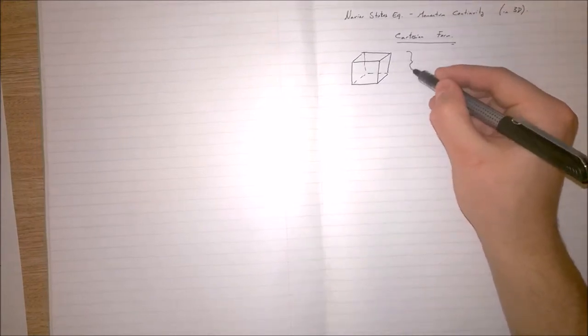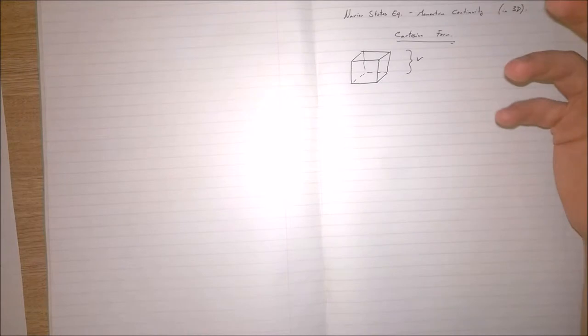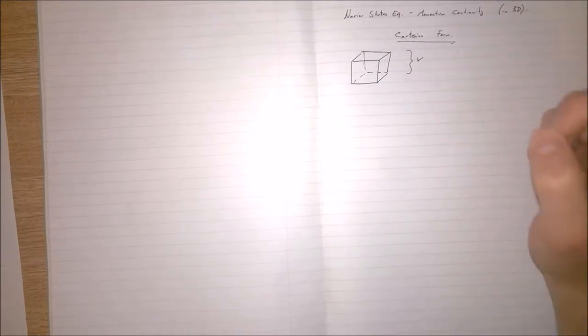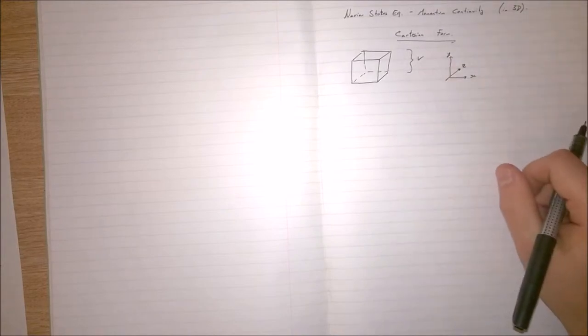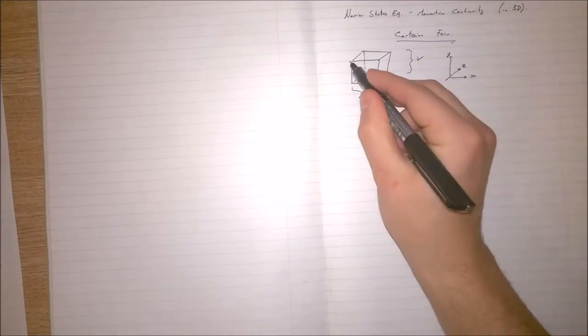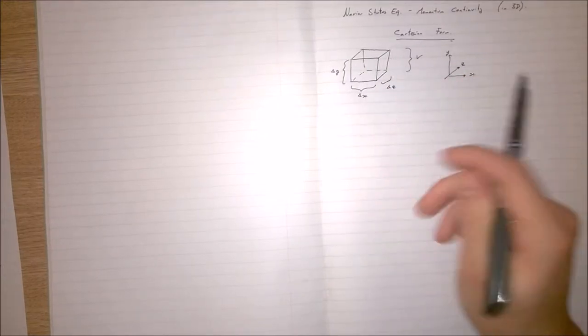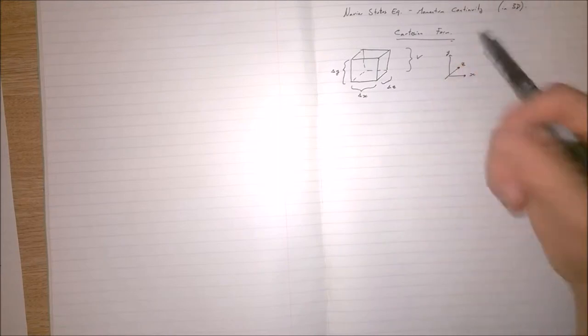You can look at the momentum continuity — or indeed the mass and energy — in different environments. The environment that we're going to look at is the Cartesian form. So this here is our fluid, the fixed volume. It's just going to be an arbitrary but very small amount of the fluid. We're going to be working with Cartesian coordinates, and the fluid is going to have these dimensions: dx meters wide, dz meters deep into the page, and dy meters tall.